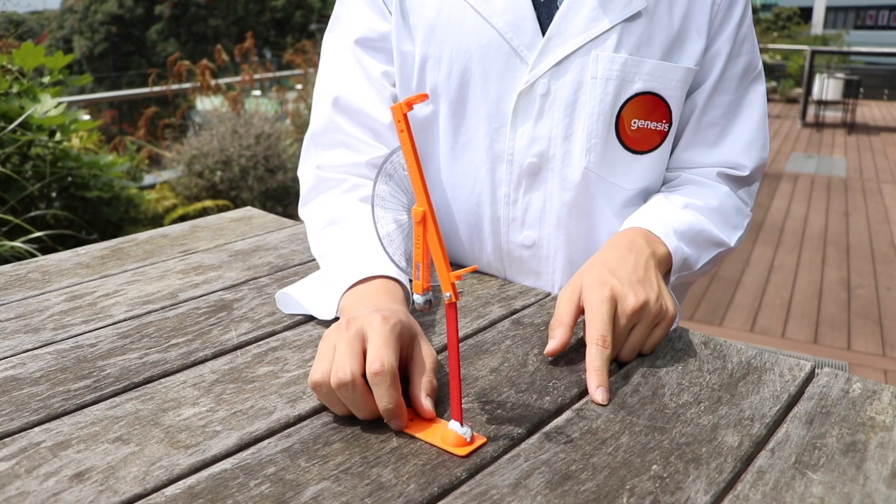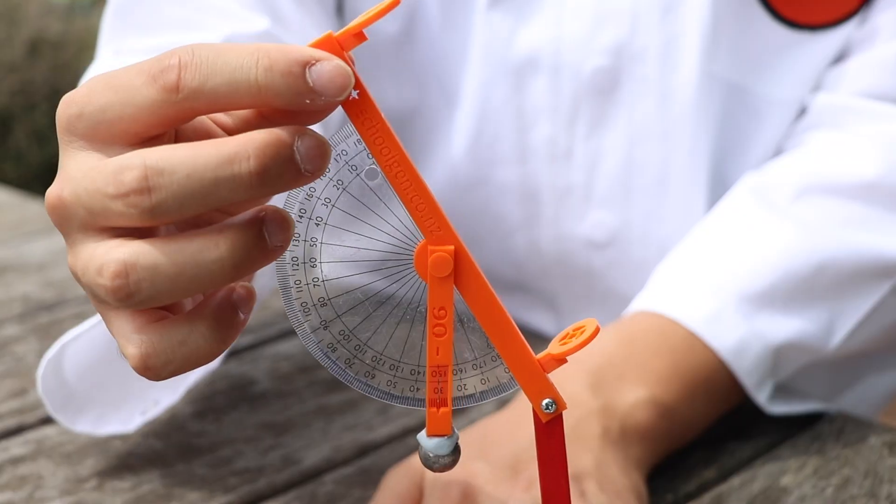Hi guys, today we're going to be making the Sun Inclinometer. It's a very interesting thing as it allows you to find the angle of the sun as well as angles of roofs.